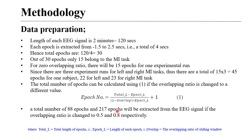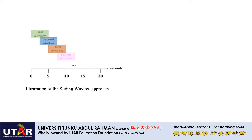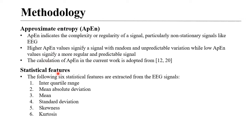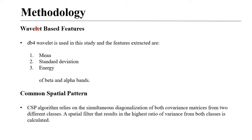Epochs can also be overlapped. We used zero overlapping, 50 percent, and 80 percent overlapping, producing 45, 88, and 217 epochs respectively. We used five features: band power of delta, theta, alpha, and beta bands; approximate entropy; statistical features (six in total); wavelet-based features using the Daubechies db4 wavelet with mean, standard deviation, and energy of beta and alpha bands; and common spatial pattern (CSP) features.